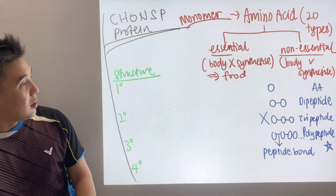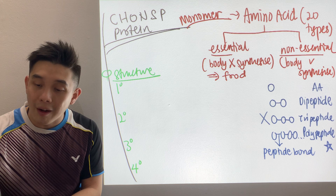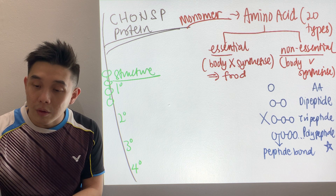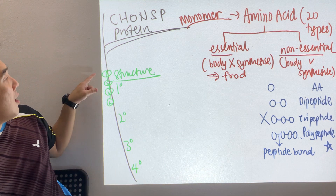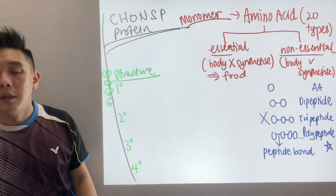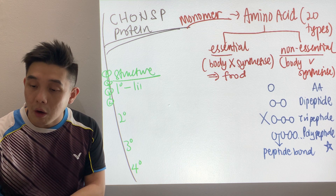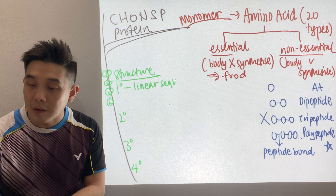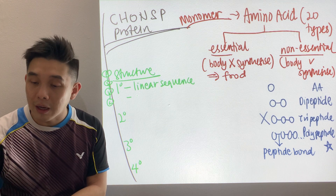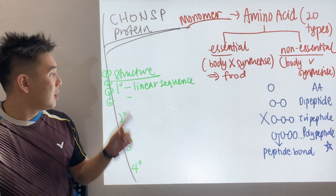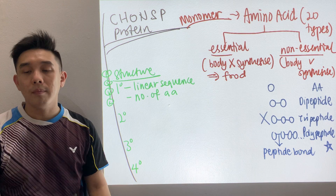Now, primary structure — for example, let's say there are four amino acids: alanine, serine, valine, lysine. What you see here is the primary structure. Why? It is a linear sequence — 'urutan linear'. We can also clearly see the number of amino acids, in this case four.